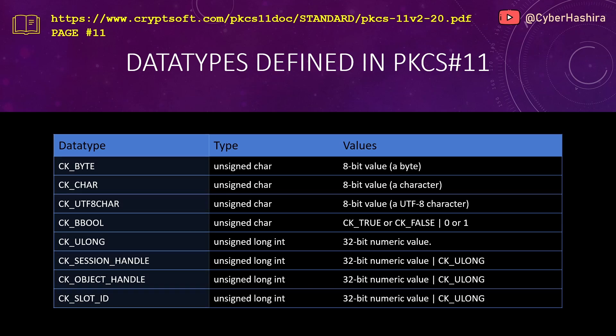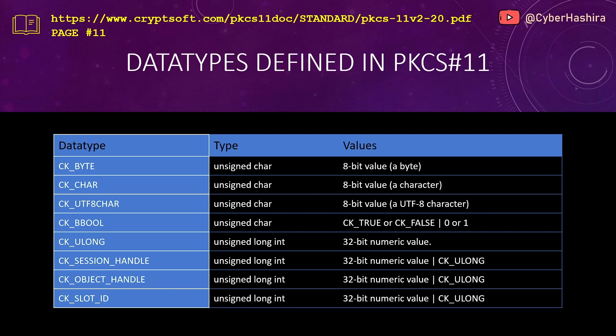The data types in PKCS11 are aliases defined for the convenience of a developer. These aliases make it easy to identify what is stored inside a variable. For example, a variable declared as type CK_SLOT_ID can be easily identified as storing a slot ID, and a variable of type CK_SESSION_HANDLE can be identified as storing a session handle number.